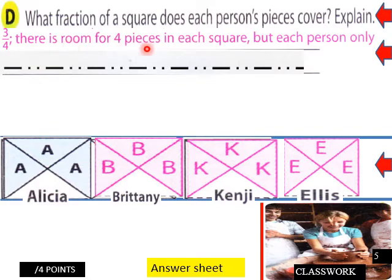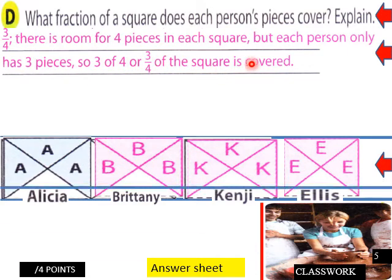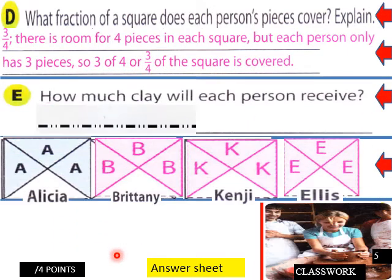So here is the response and then the explanation. Three over four. There is room for four pieces in each square. But each person only has three pieces. So three of four or three-fourths of a square is covered.